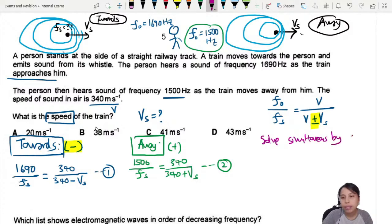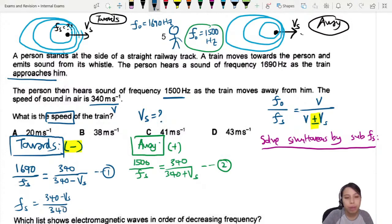I need to solve simultaneous by substituting f_s into each other. Let me rearrange this. This one will be f_s equals 340 minus v_s over 340 times 1690. The other side, if I rearrange, f_s equals 340 plus v_s over 340 times 1500.